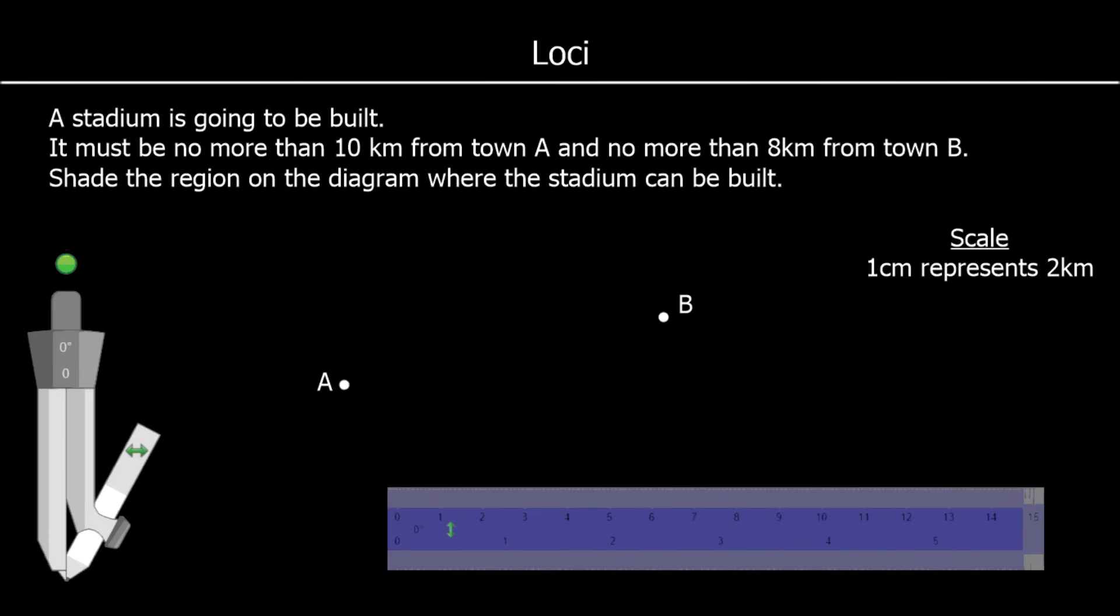Here's a different type of question. We're told a stadium is going to be built no more than 10 km from A and no more than 8 km from B. Shade the region where the stadium can be built. And we're told 1 cm is 2 km.